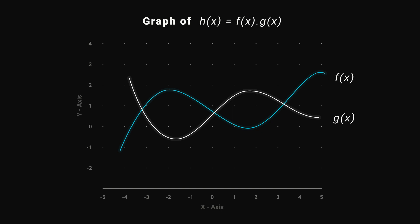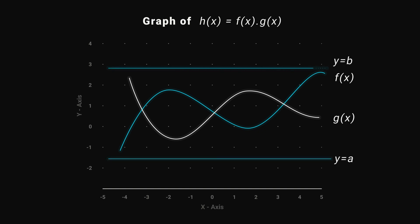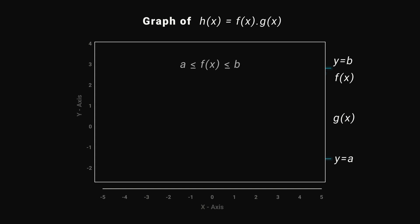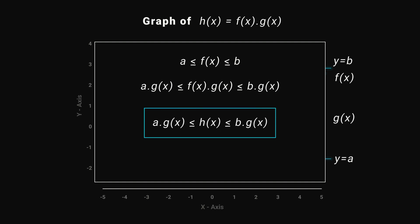Now let's draw the product of two functions. For this, we have to find the maximum and minimum of f. Let's say a is the minimum and b is the maximum, so f lies between a and b. So a times g(x) is greater than or equal to f(x)·g(x) is greater than or equal to b times g(x). That is, a·g(x) is greater than or equal to h(x) is greater than or equal to b·g(x). And when f(x) equals 0, h(x) is also equal to 0.